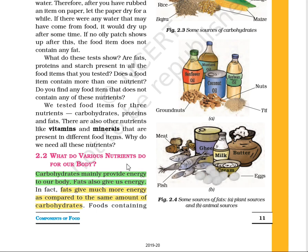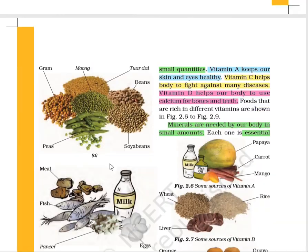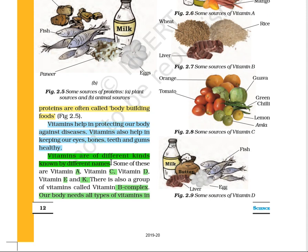Now let us study what various nutrients do for our body. As told earlier, nutrients are specialized to perform a particular function. Carbohydrates and fats provide us energy — thus they are called energy-yielding food. You will be amazed to know that fat gives double the energy given by the same quantity of carbohydrate. The food which contains proteins are called body-building foods. As you know, our nails, skin — everything contains protein. That means protein is making our body parts.